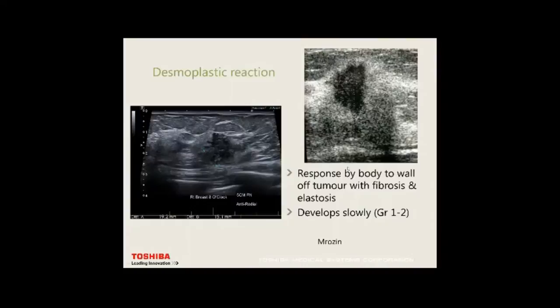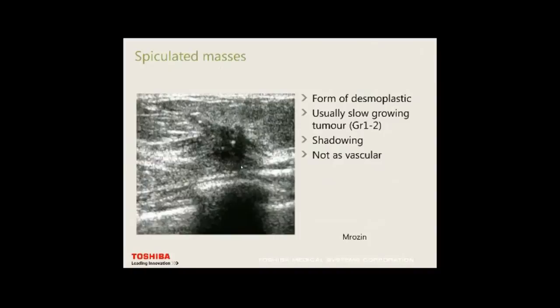The desmoplastic reaction is the body's response to wall off the tumor with fibrosis and elastosis — like a fibrous capsule forming around an implant. The body can do this because these cancers are developing slower; they tend to be grade 1 or grade 2. These cancers tend to be spiculated masses, which is a form of desmoplastic reaction.